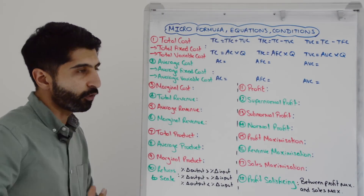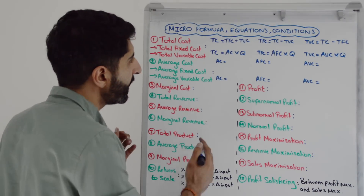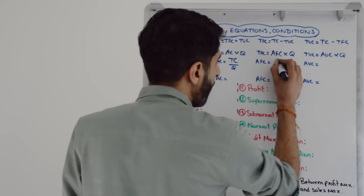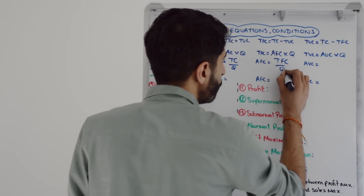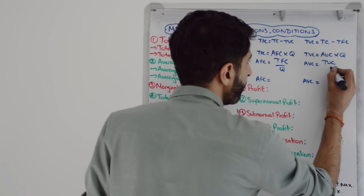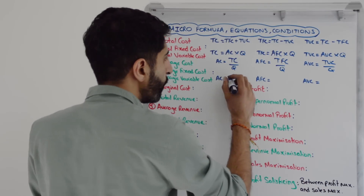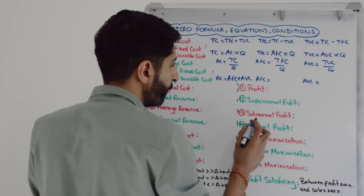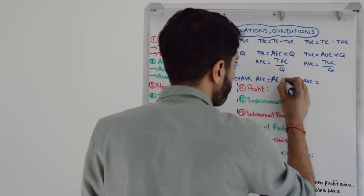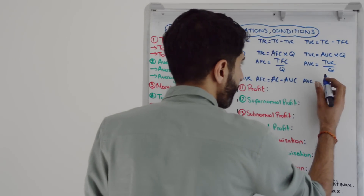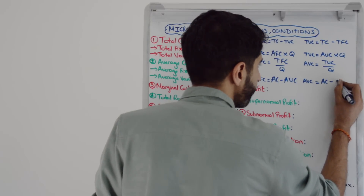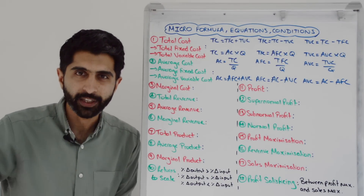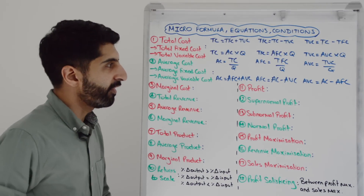What about the average equations — not just AC but AFC and AVC? Well the easy way to get it: take your total and divide by Q. So TC divided by Q, or TFC divided by Q, or TVC divided by Q. The other way: average cost is average fixed cost plus average variable cost. Rearrange that for AFC: average cost minus AVC. And average variable cost is average cost minus average fixed cost. So which equation do you use? Depends on the data you're given — let that drive the equation that you use.